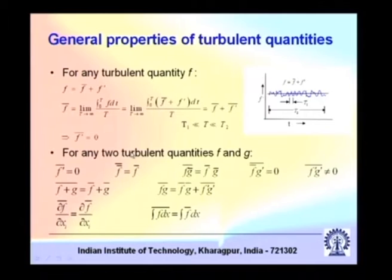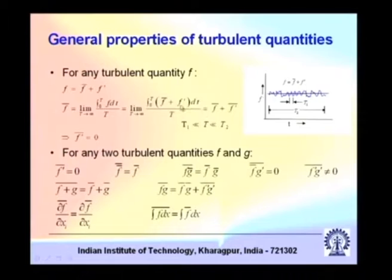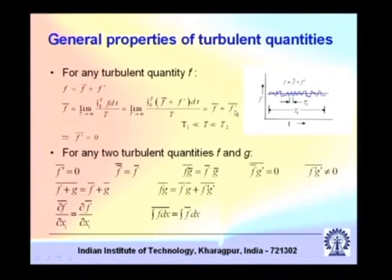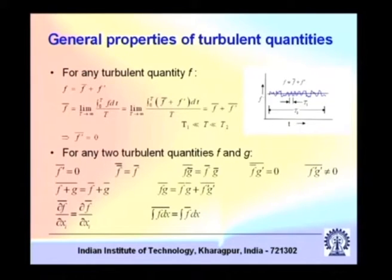We defined the average in a particular way. For example, the time average of f, that is f-bar, is defined as the limit as T tends to infinity of the integral of f dt divided by capital T, where capital T is the time interval over which the average is taken. Capital T should be much greater than the turbulent fluctuation scale T1, and at the same time much smaller than the system characteristic scale T2. From this definition, the average of f-prime equals zero, so any turbulent fluctuation quantity has a zero average.